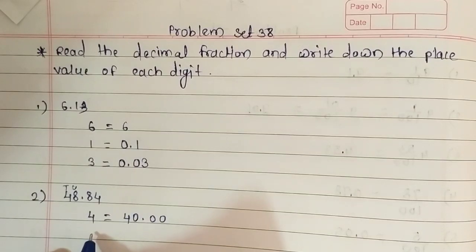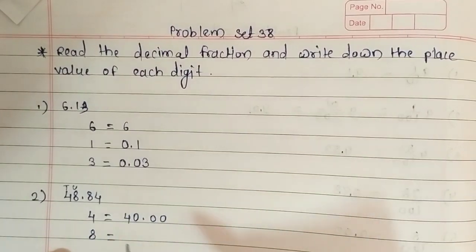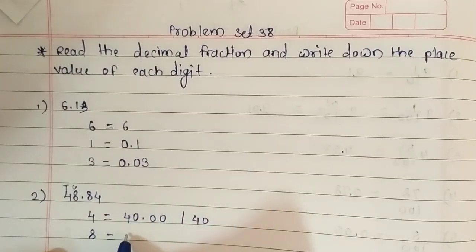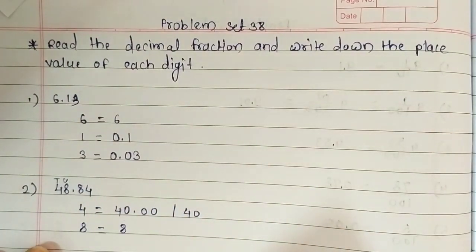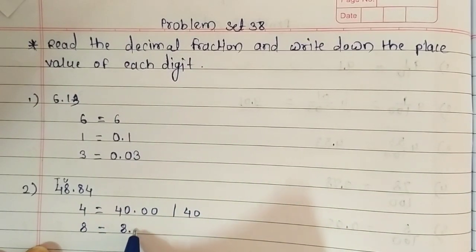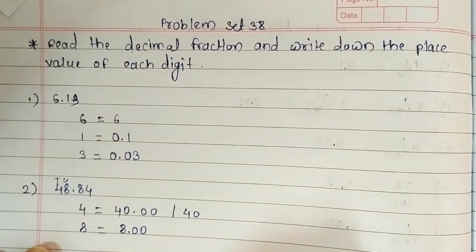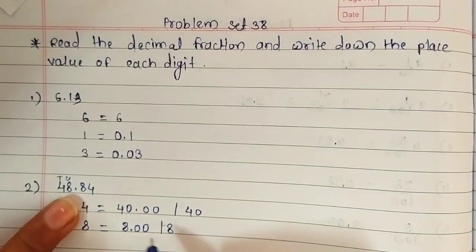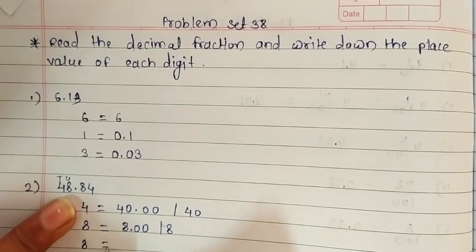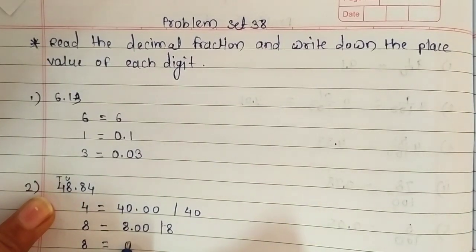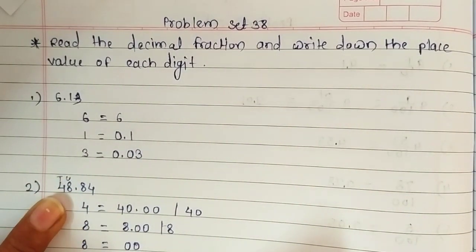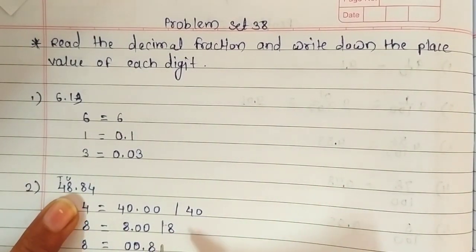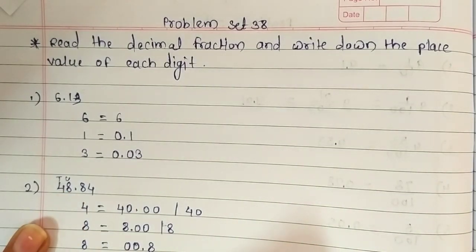Let's write the value of 8 here. You can write it as 40 also. 8 is in the unit place, so its place value is 8 — we write 8, then decimal point, and we can write it as 8.00 or simply 8. Now let's take the next 8. Its place value: write 0 for 4, then 0 for 8, then place a decimal point and 8. Its place value is 0.8.